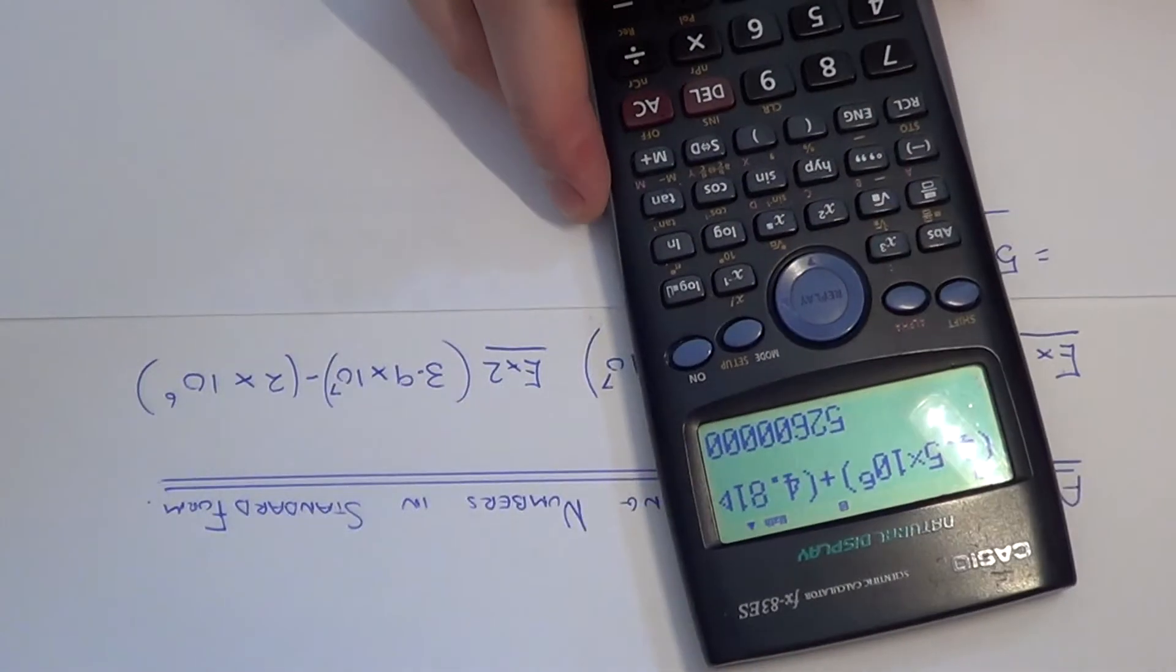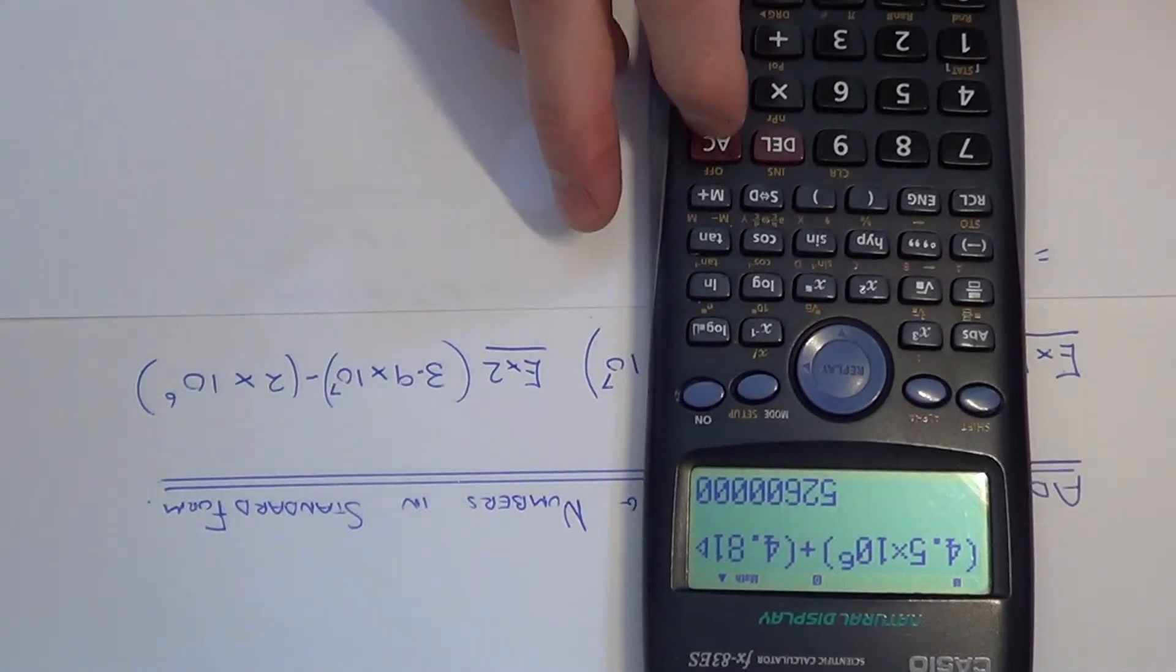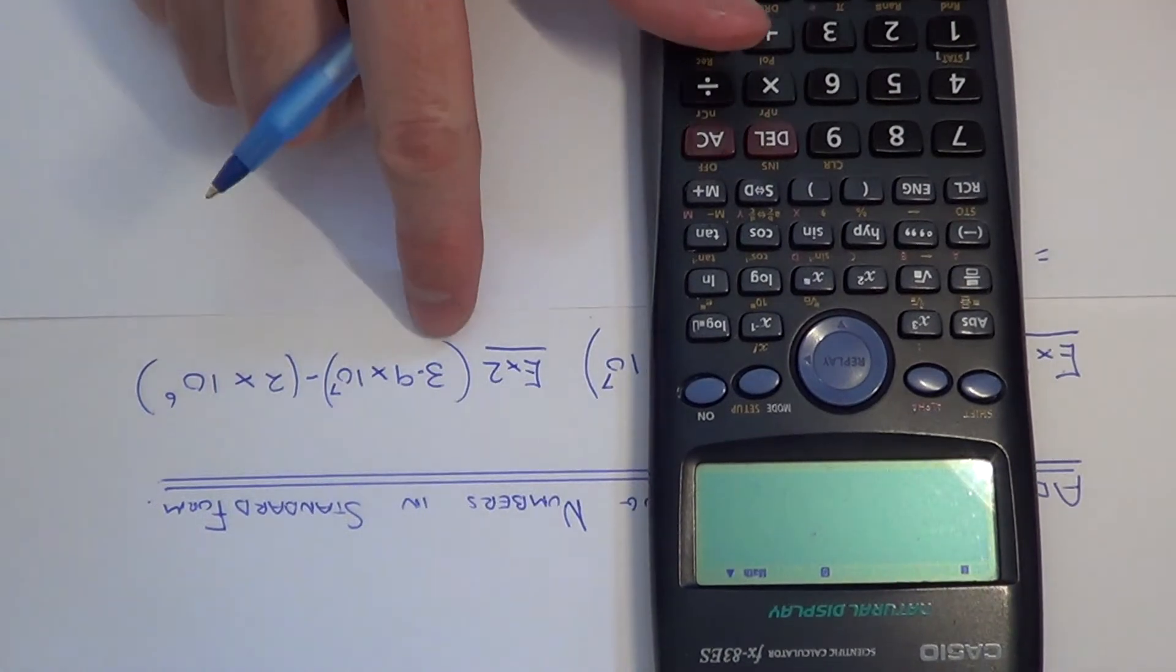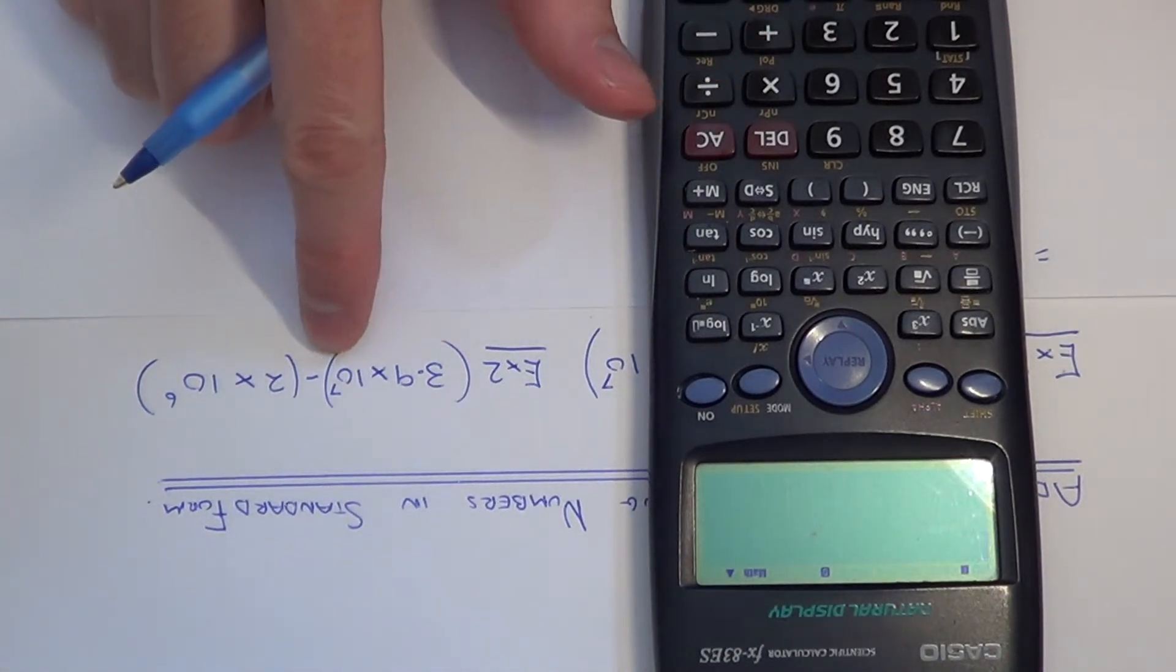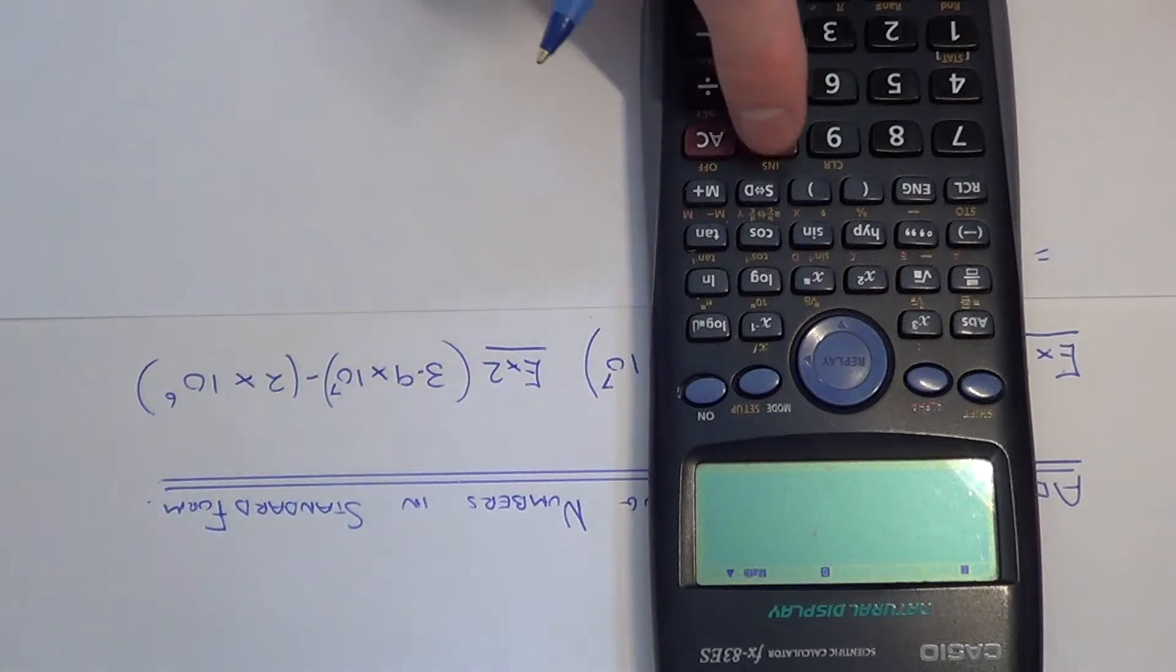So let's look at Example 2. This time we're doing a subtraction. So we've got 3.9 times 10 to the power of 7 minus 2 times 10 to the power of 6.